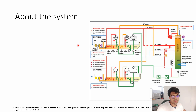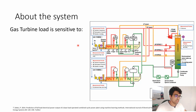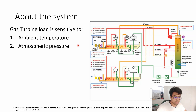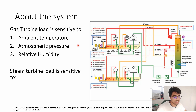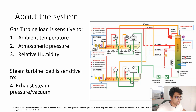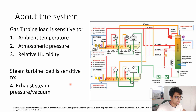Before we build a neural network, we need a bit of knowledge about the system. It is known that the gas turbine load is sensitive to ambient temperature, atmospheric pressure, and relative humidity, and the steam turbine load is sensitive to exhaust steam pressure (vacuum). If you want to know more, I've put the link to a highly cited paper in the description box.